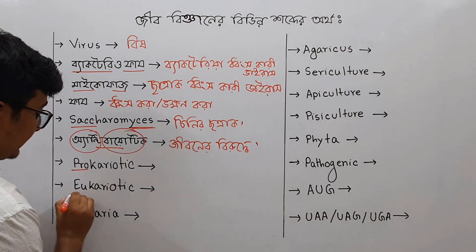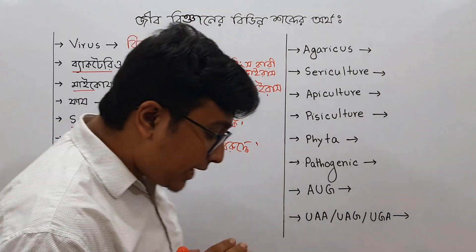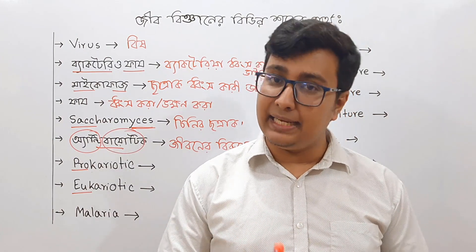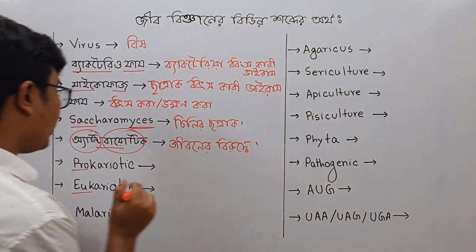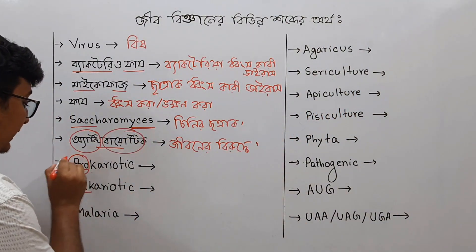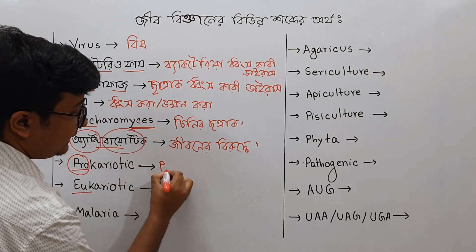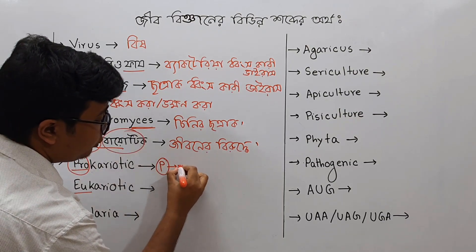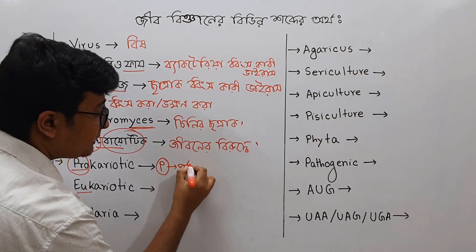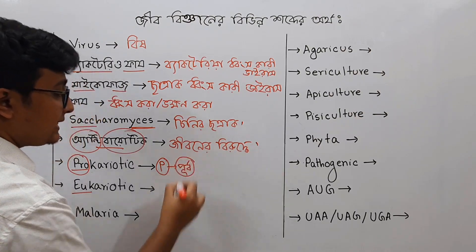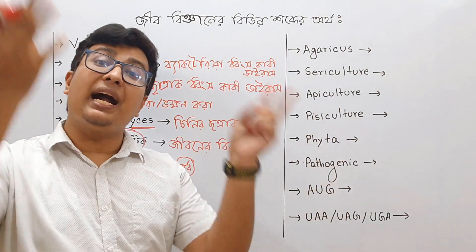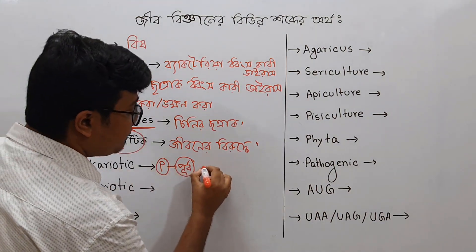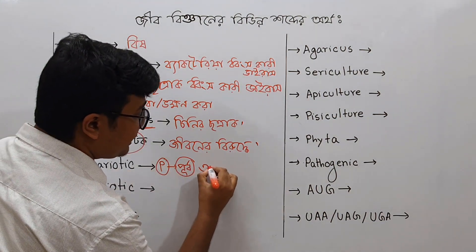Prokaryotic and eukaryotic. How do you think of prokaryotic and eukaryotic? How do you think of the Bangla meaning? This is the technique. Pro is the P. P is the prokaryotic. We have to say P is the full of P. What is the prokaryotic? A-do is the prokaryotic. So, it is a prokaryotic.